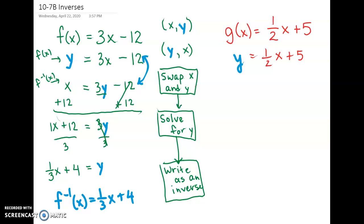That's going to give us g inverse. So as soon as we swap x and y, and we make this x equals 1 half y plus 5, we now have the inverse. This is now f and g inverse.